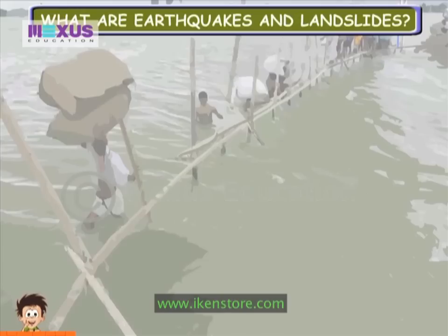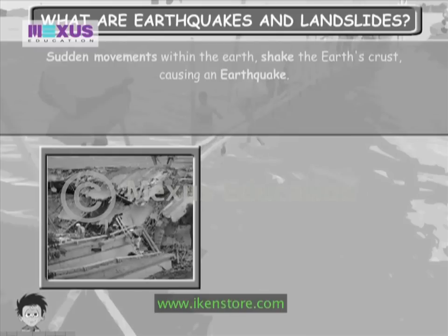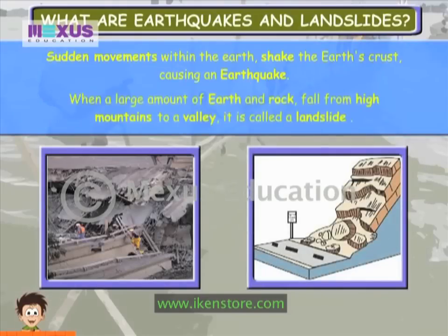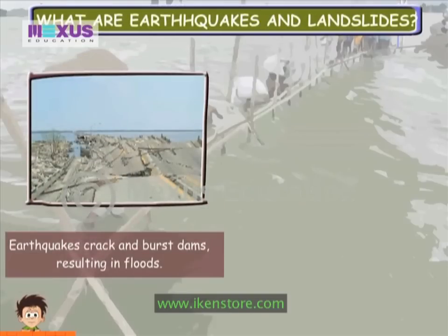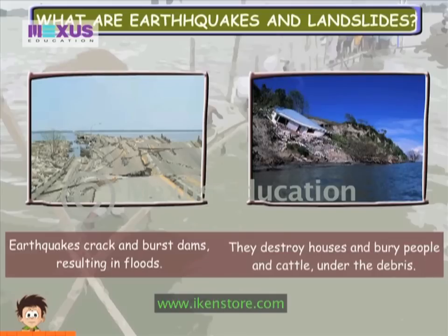What are Earthquakes and Landslides? Sudden movements within the earth shake the earth's crust, causing earthquakes. When a large amount of earth and rock fall from high mountains to a valley, it is called a landslide. Earthquakes crack and burst dams resulting in floods. They destroy houses and bury people and cattle under the debris.